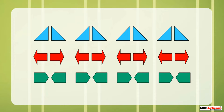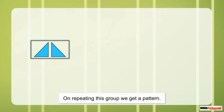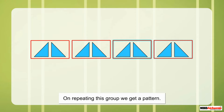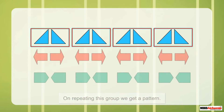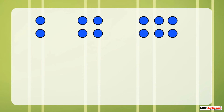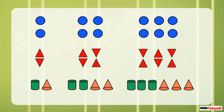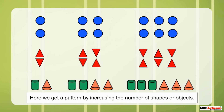Look at these patterns — here the position of an object is changed to make a group. On repeating this group, we get a pattern. Similarly, we have these two patterns.